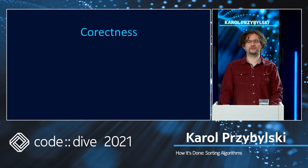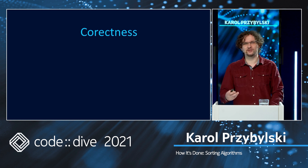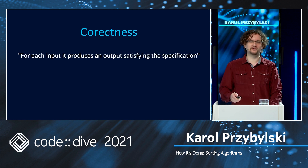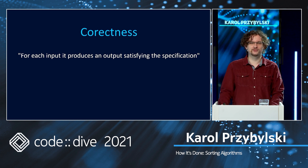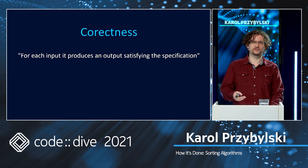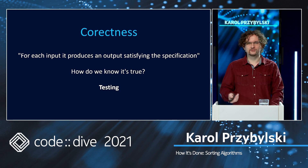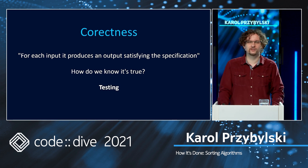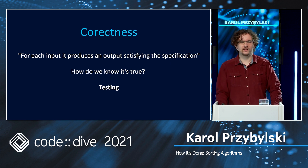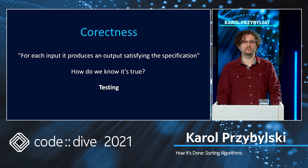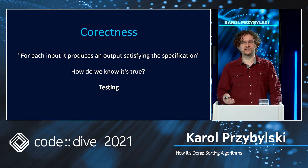The second characteristic is that our solution should be correct — correctness in the sense of computer science, which can be defined as: for each input, it produces an output satisfying the specification. For some number of input arguments, we want to always have a predictable and correct result. And how do we know it's true? Obviously by testing. We can never test something to 100%, but we can try. This weekend I was watching a baking show and a baker was asked how he knows his cake is good. He answered: I only know this because I have tested it a thousand times and I understand the basic principles. And it applies to baking — it also applies to computer science.